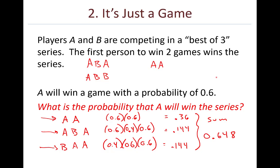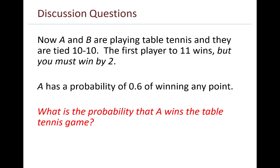Here's before we leave point number two, here's another similar example. Suppose that A and B are now playing table tennis and they are currently tied 10 to 10. In table tennis, the first player to 11 wins, but you must win by two. And once again, we'll suppose that A is a little bit of a better player than B and A has a probability of 0.6 of winning any point. So what is the probability that A wins the table tennis game? This situation has a little bit of a different character to it than the previous one.